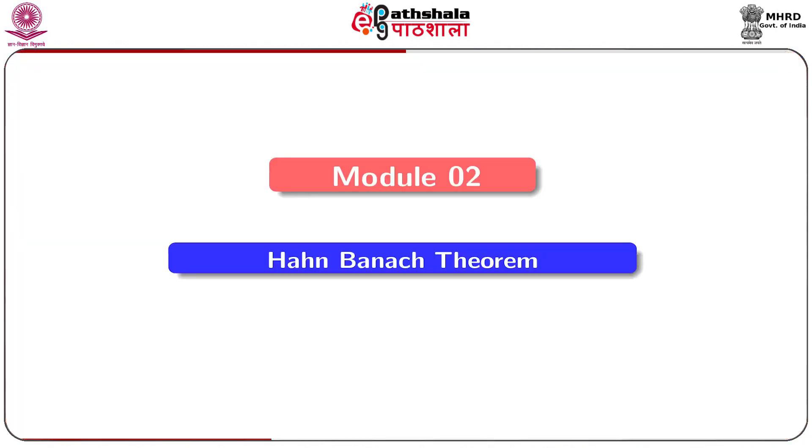Initially the theorem was discovered by Hahn in 1927, and then by S. Banach in 1929, and then in 1938 by H. F. Bohnenblust and A. Sobczyk. With this we shall start the detail of module 2, whose title is the Hahn-Banach theorem.